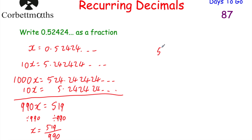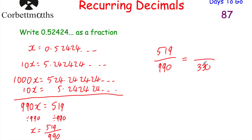Now let's simplify 519 over 990. They're not both even, so we won't divide by 2, 5, or 10. Let's check if the numerator is divisible by 3: 5 plus 1 plus 9 equals 15, which is divisible by 3. So dividing both by 3: 990 divided by 3 is 330, and 519 divided by 3 — 3 into 5 is 1 remainder 2, 3 into 21 is 7, 3 into 9 is 3 — giving 173. So x equals 173 over 330.